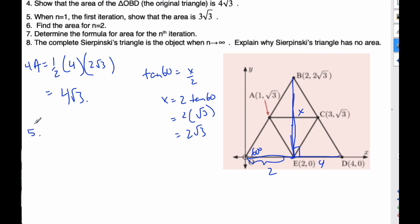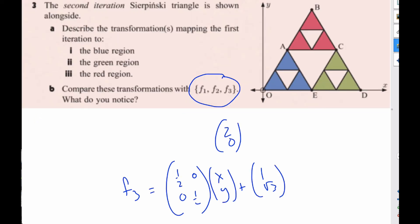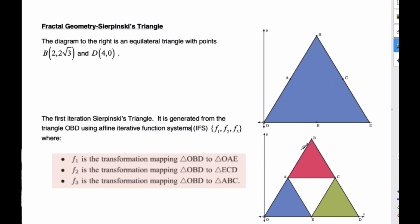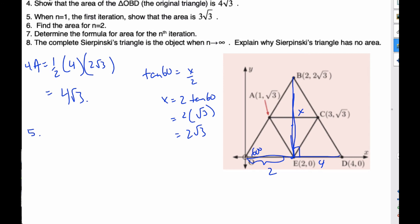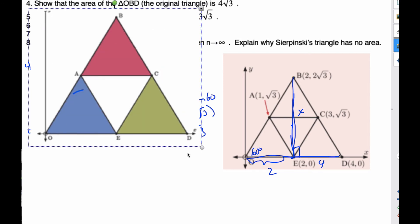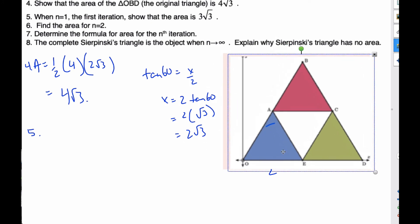The next problem says when n = 1, the first iteration, show that the area is 3√3. Well, making sure we know what the first iteration means, this is the first iteration, and so I'm looking for the area of the shaded region. So if I take my first iteration, I want the area of the shaded part. If the whole part is 1, the shaded is going to be three-quarters because there are 4 equal triangles. So it's going to be my original area times three-quarters, which is 3√3.